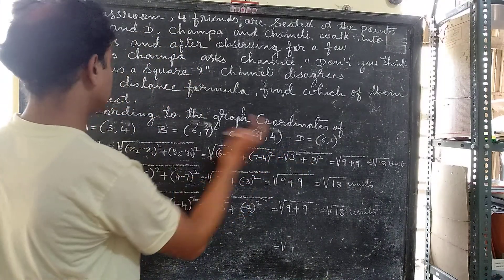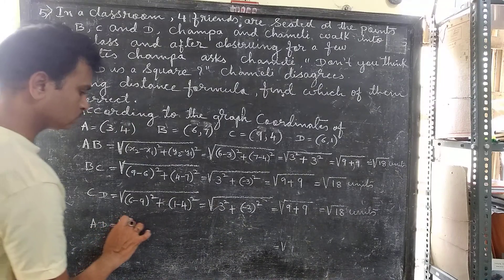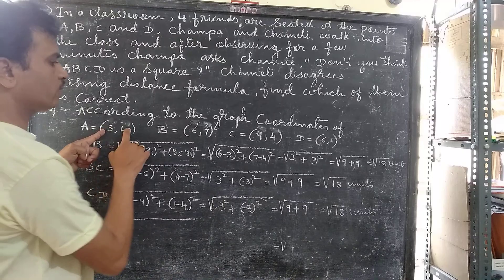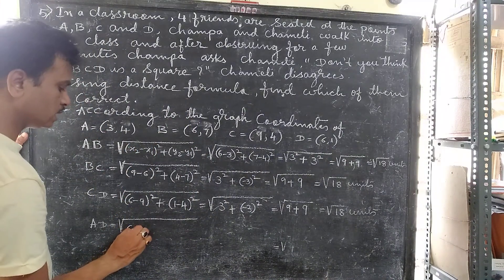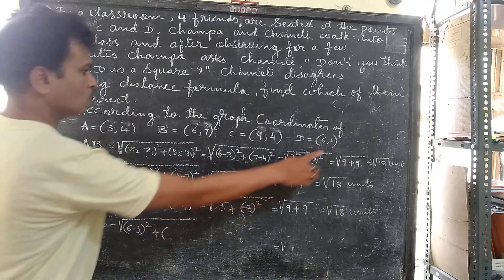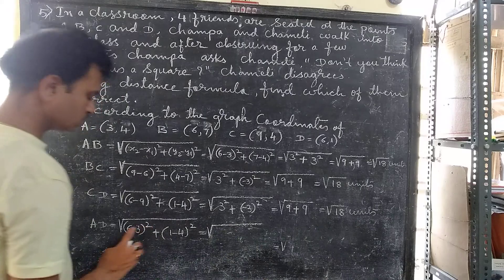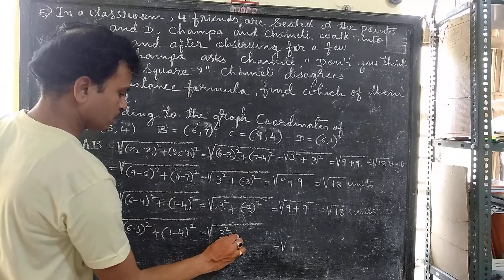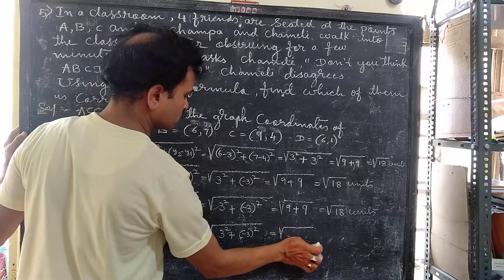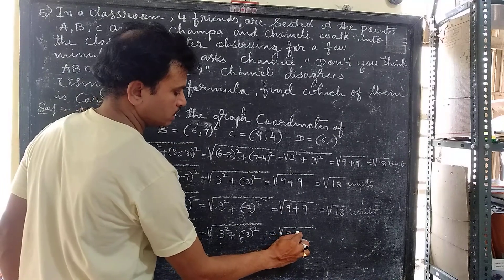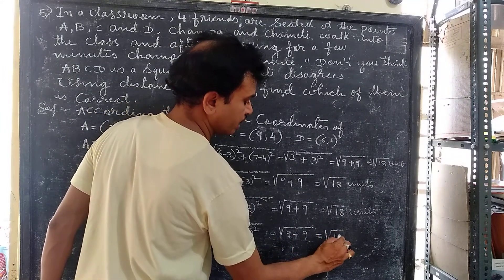Similarly, we find the distance DA. Taking D(6, 1) as (X1, Y1) and A(3, 4) as (X2, Y2), we get √[(6 − 3)² + (1 − 4)²] = √[3² + (−3)²] = √[9 + 9] = √18 units.